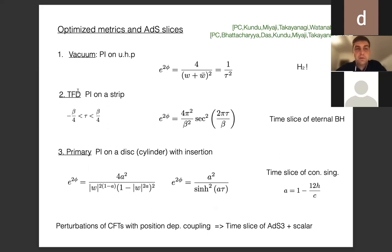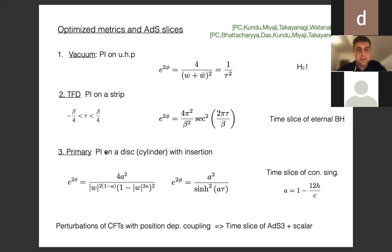For explicit examples: for the vacuum of a CFT we perform the path integral on the upper half plane, and the solution of the Liouville equation is simply e^{2phi} = 1/(tau^2 + x^2), which satisfies the boundary condition where as tau goes to epsilon it goes like 1/epsilon^2. This is nothing but the hyperbolic plane. For the thermofield double state, the path integral is on a strip of size beta/2, and the appropriate solution is e^{2phi} = 1/cos^2, satisfying 1/epsilon^2 boundary conditions at both boundaries at ±beta/4.